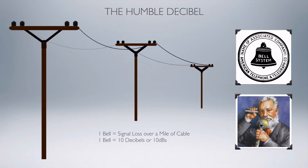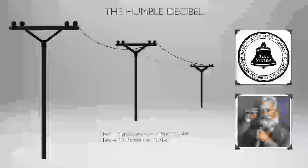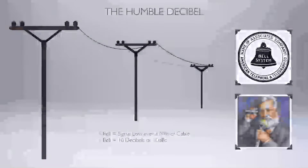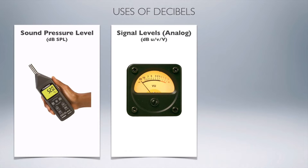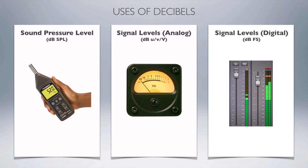The key thing to understand is that we're going to be using dB's as a measure of a relationship — either in sound pressure level, signal levels in analog, or signal levels in digital. A dB is not a finite measurement like a pound or a meter; it is always a relationship, a measurement against a reference level.